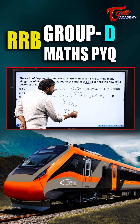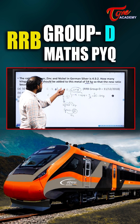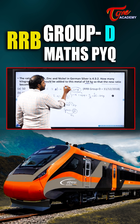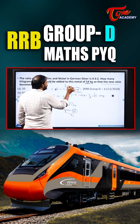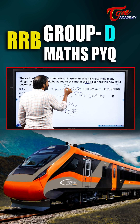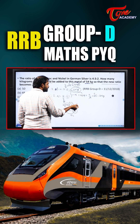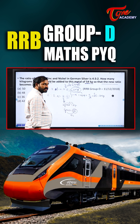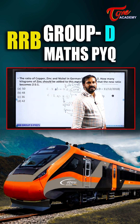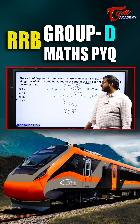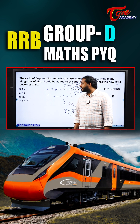Earlier, zinc was 3 parts out of 9, so zinc = 3/9 × 54 = 18 kg. Now the zinc became 60 kg. So the quantity of zinc added is 60 − 18 = 42 kg.